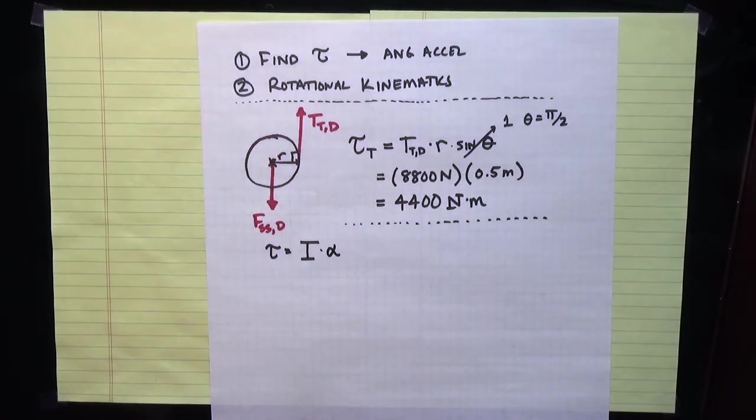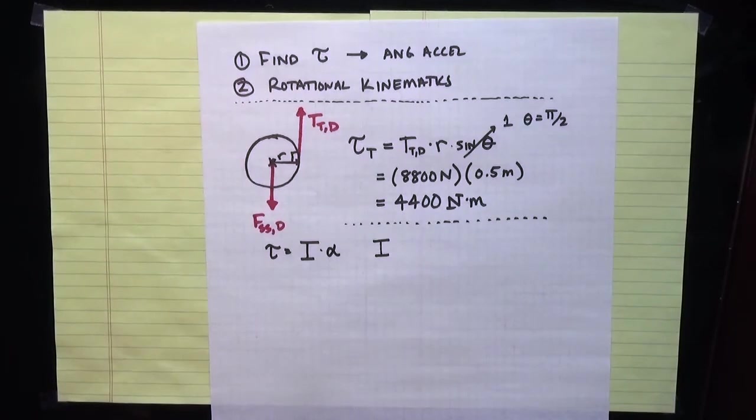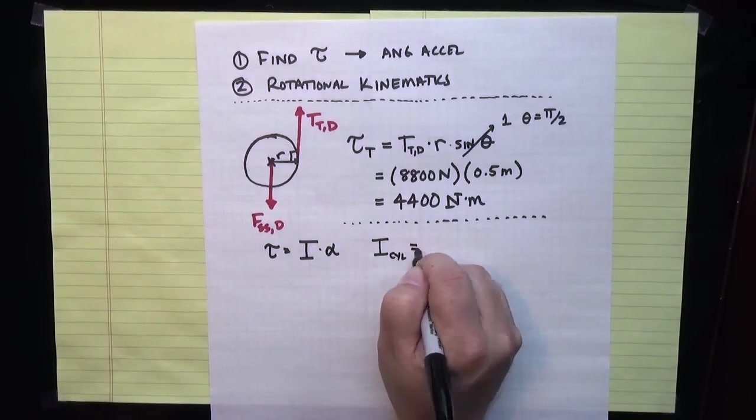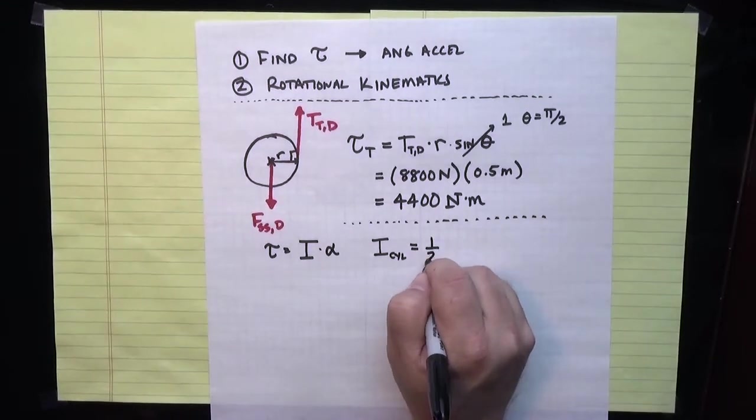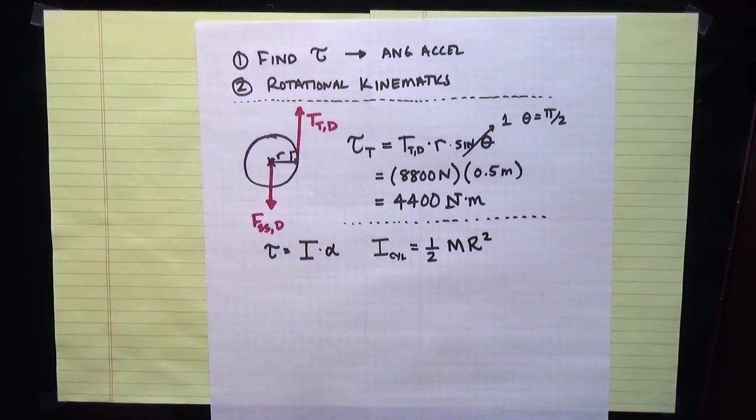In this case, I'm going to assume that the drum that the tether is wrapped around looks like a solid cylinder rotating around its center. I know that the moment of inertia, if I look it up in our tables for that case, for a cylinder is a half times the mass times the radius squared of that cylinder.